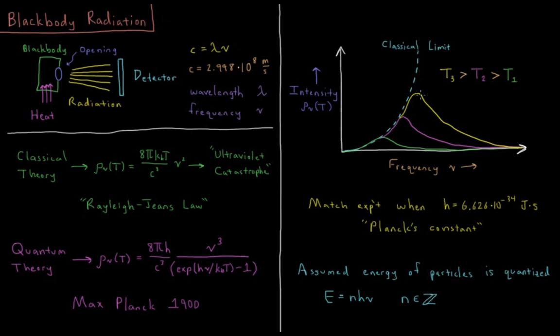As the temperature goes up, this peak keeps going further up into higher energy light. What Planck found is that this type of equation matched the experiments for the experimental intensity whenever this constant h equaled the value 6.626 times 10 to the minus 34 joule-seconds. This constant was referred to as Planck's constant.